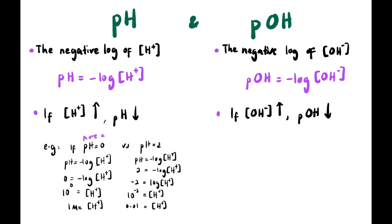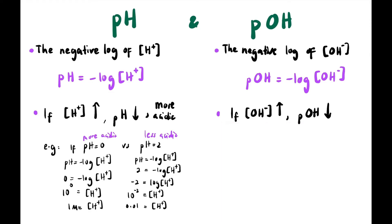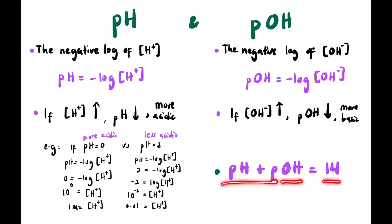According to the pH scale, pH 0 is more acidic than pH 2 — the higher the [H⁺], the lower the pH, and the more acidic. For pOH: the higher the [OH⁻], the lower the pOH, and the more basic.